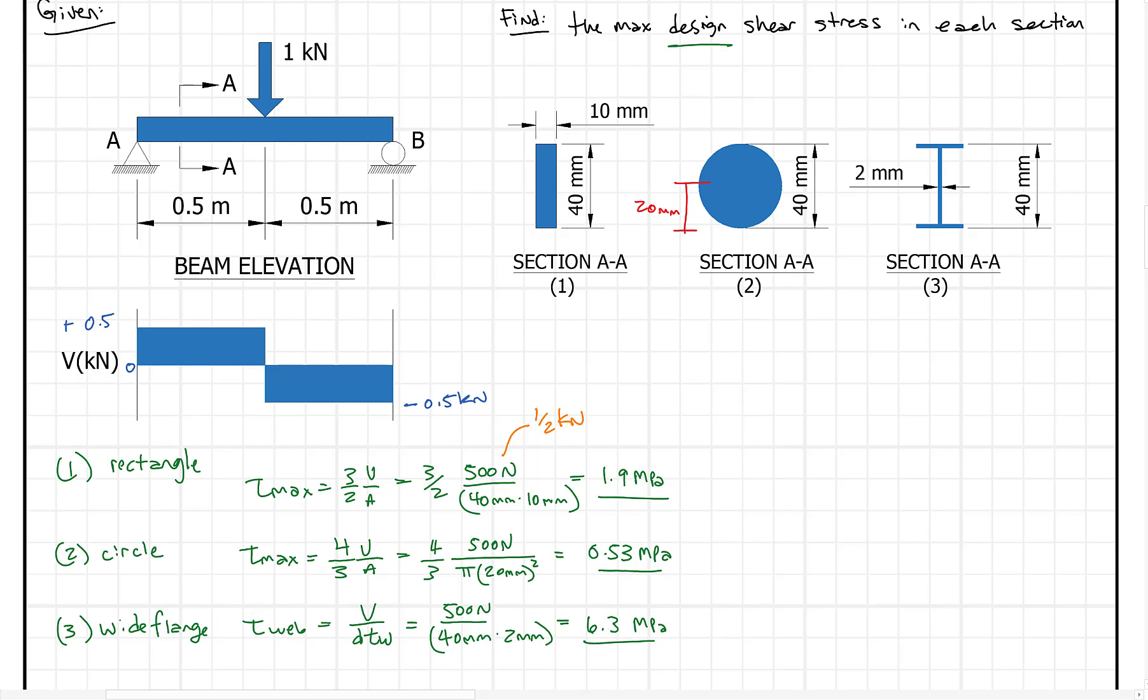So these are our answers. Nothing too crazy, nothing too complicated. But what we did, basically, was we took the maximum shear force from the shear diagram, plugged it into our equation here to get the beam design stress, really. That's what we're looking for. And this is going to be our maximum stress in a rectangular section, maximum stress in a circular section, and maximum stress in the wide flange section based on the dimensions and properties given. So that's a real basic approach to this design shear stress.